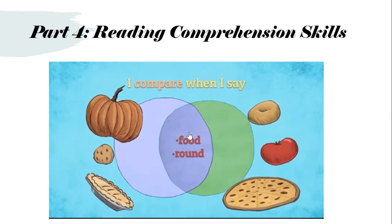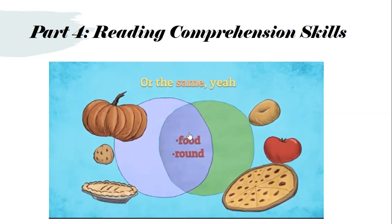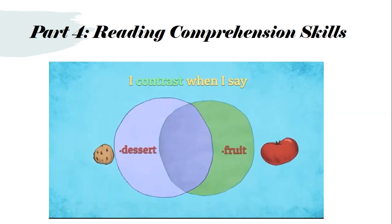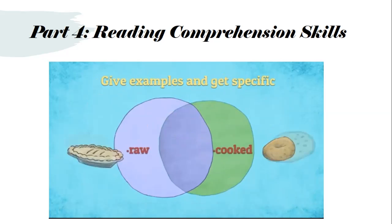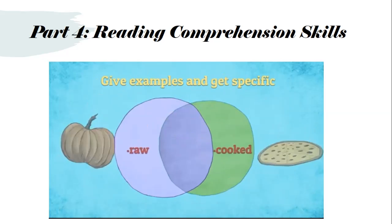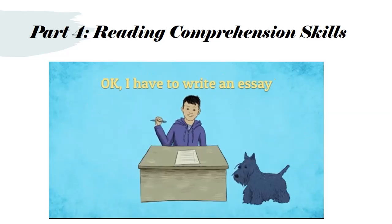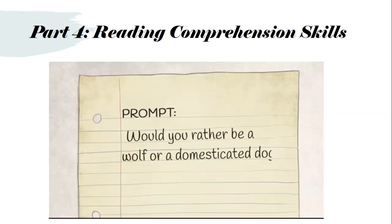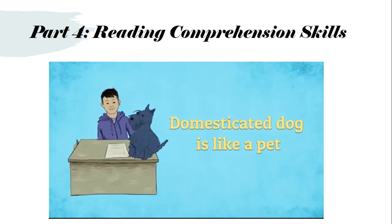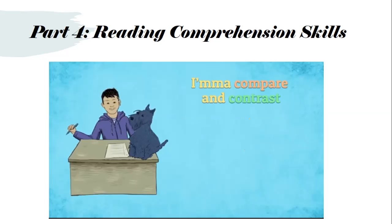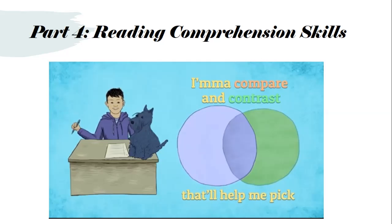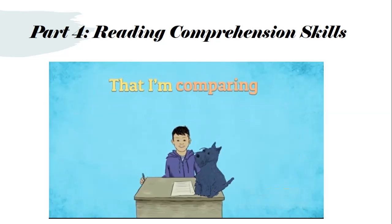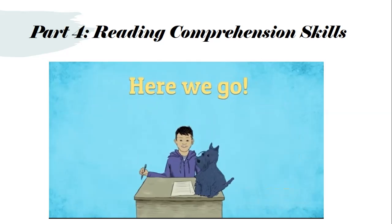I compare when I say how things are similar or the same. I contrast when I say how things are different — give examples and get specific. I have to write an essay. Here's the problem: would you rather be a wolf or a domesticated dog? A domesticated dog is like a pet. I'll compare and contrast — that'll help me pick. I use transition words to help my readers know that I'm comparing and contrasting.